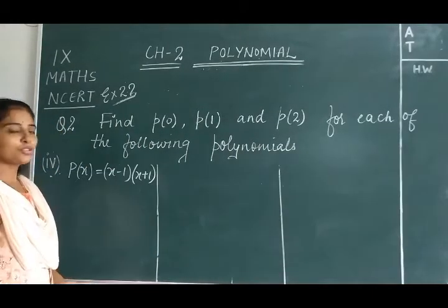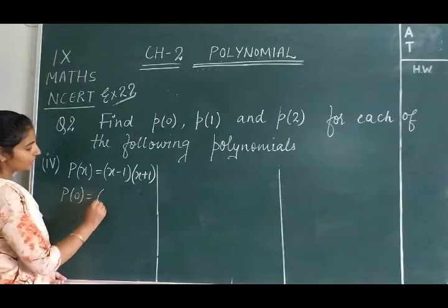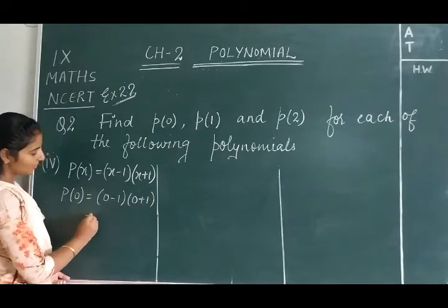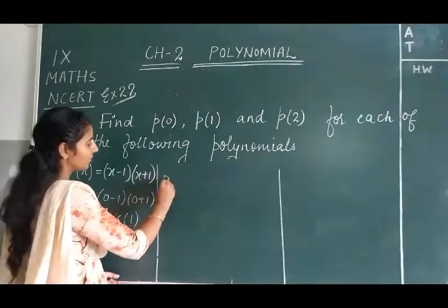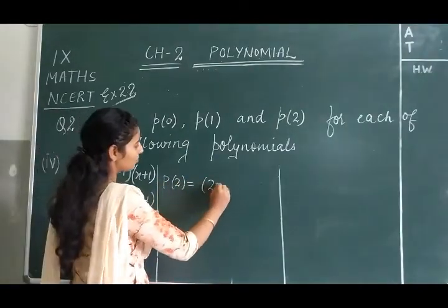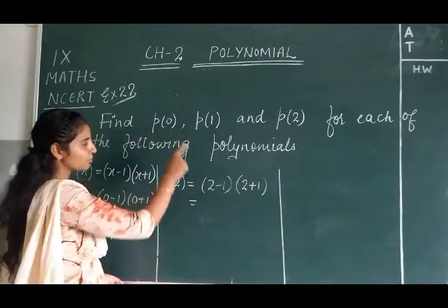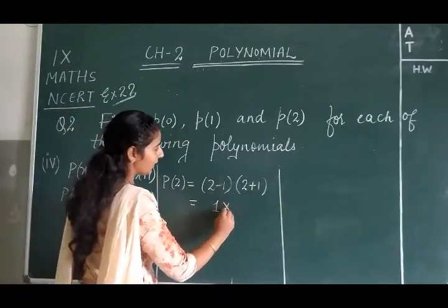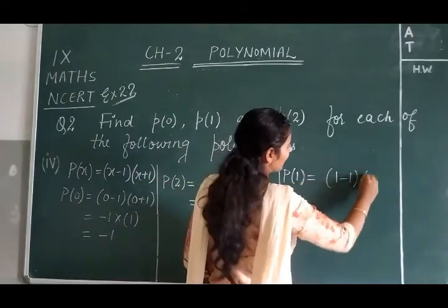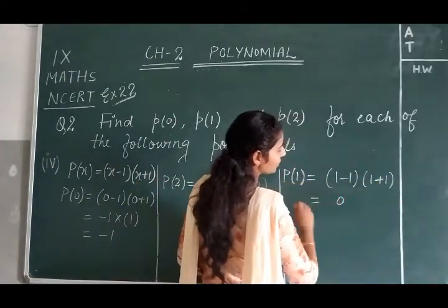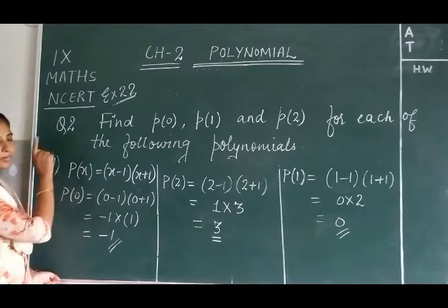Now the fourth part of question number 2. For P(0): we get (0 - 1)(0 + 1) = (-1)(1) = -1. For P(2): (2 - 1)(2 + 1) = 1 × 3 = 3. For P(1): (1 - 1)(1 + 1) = 0 × 2 = 0. This is all about the fourth part of question number 2.